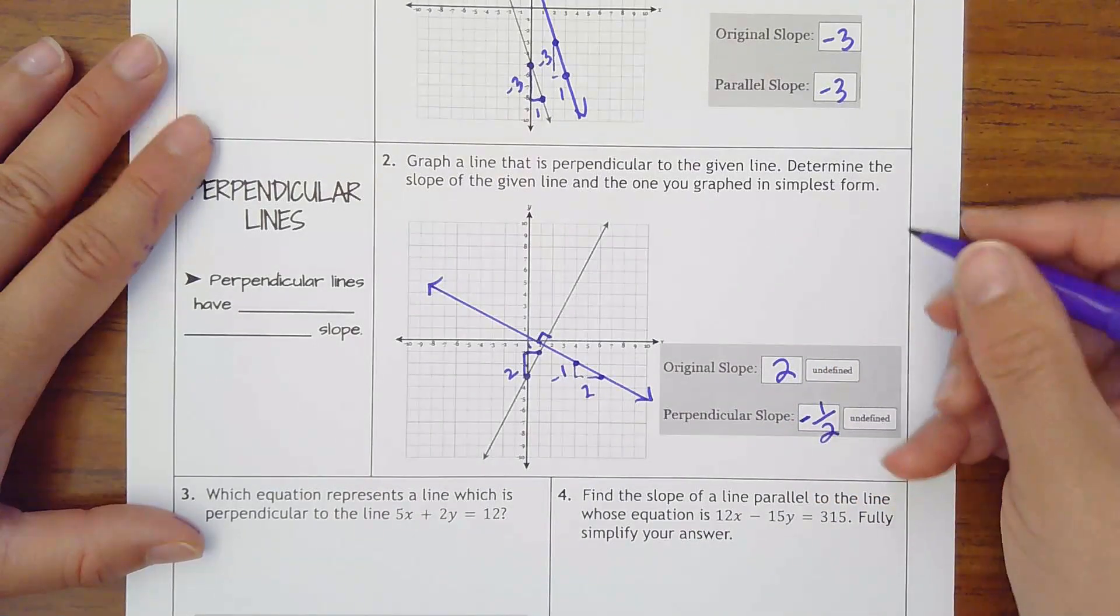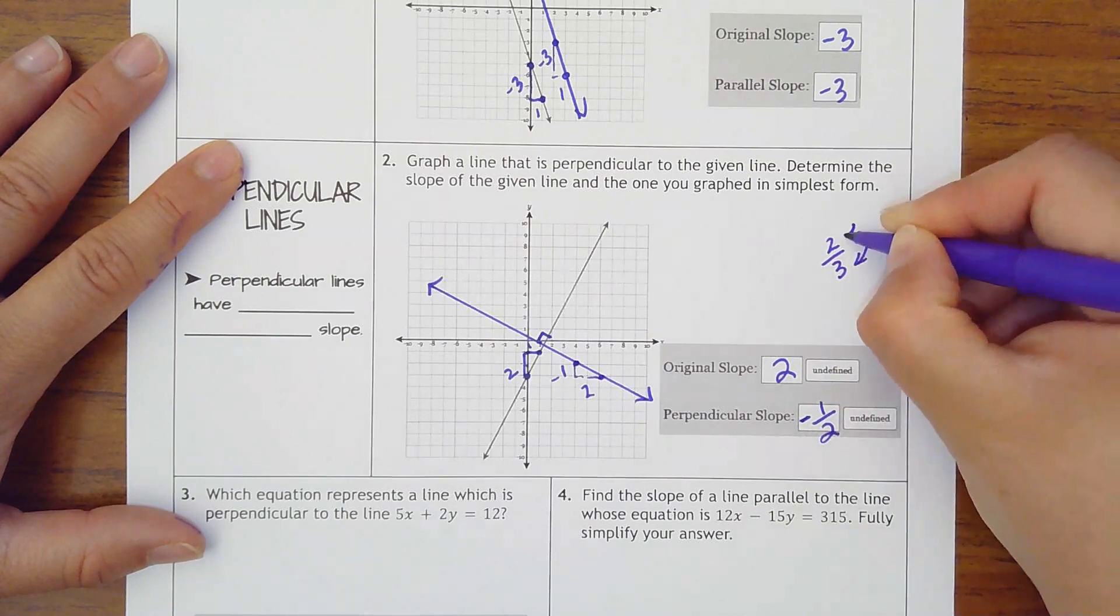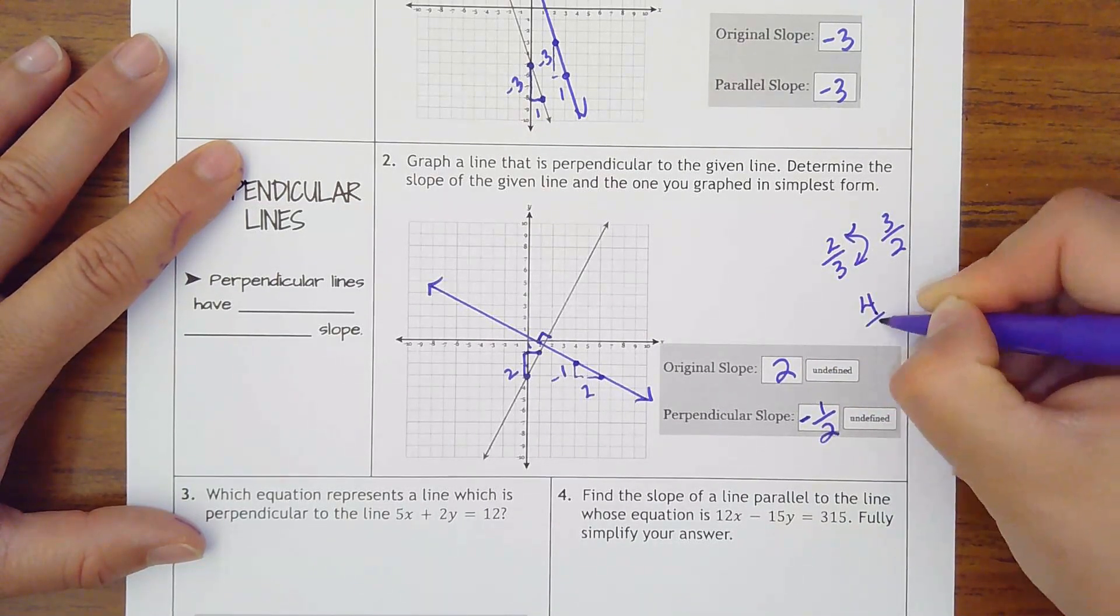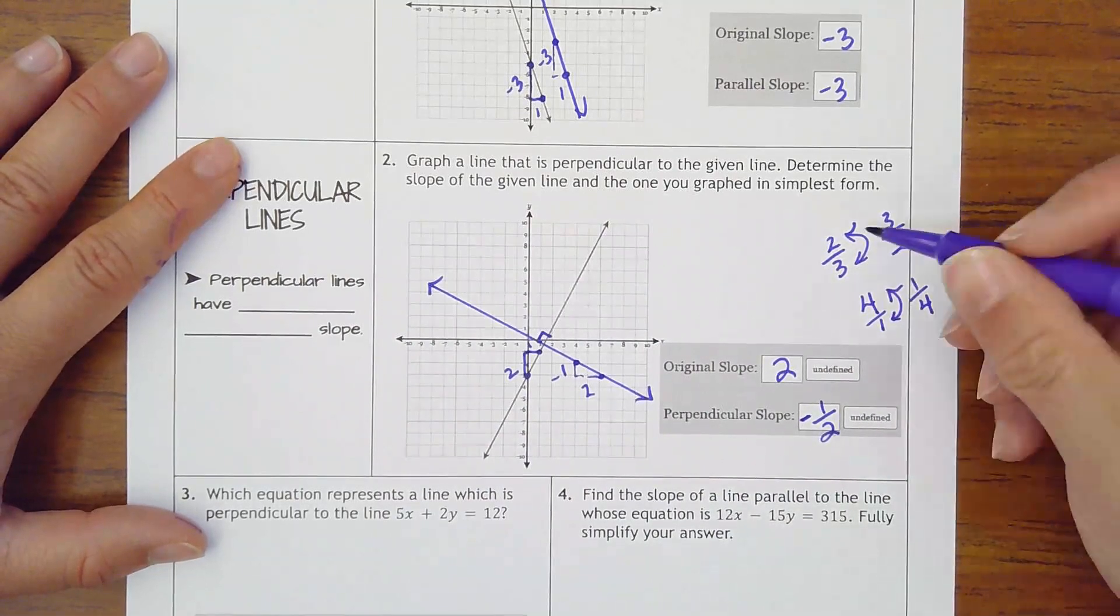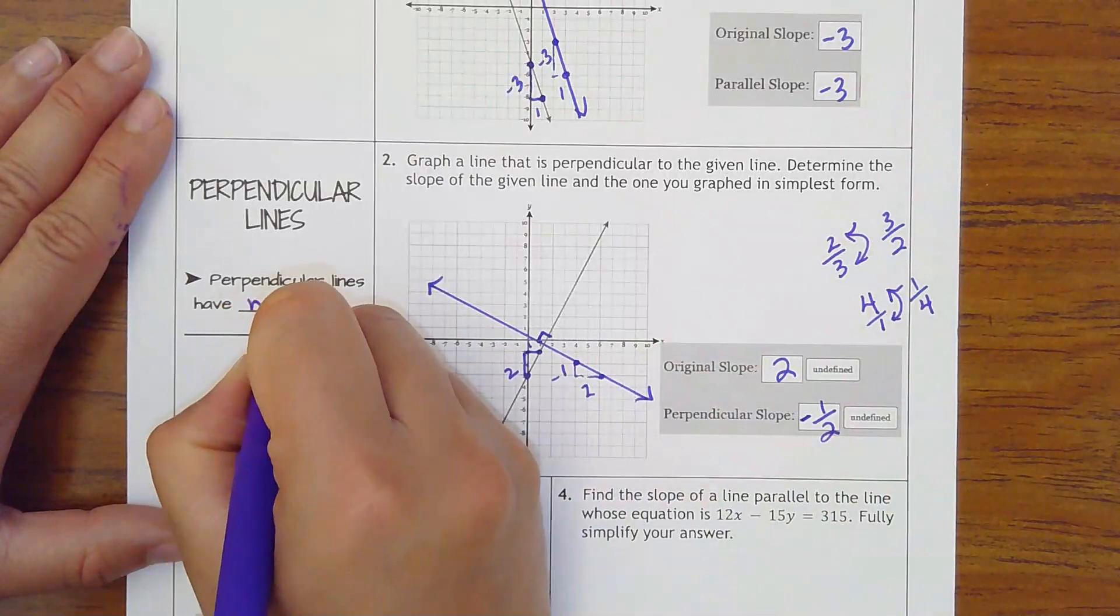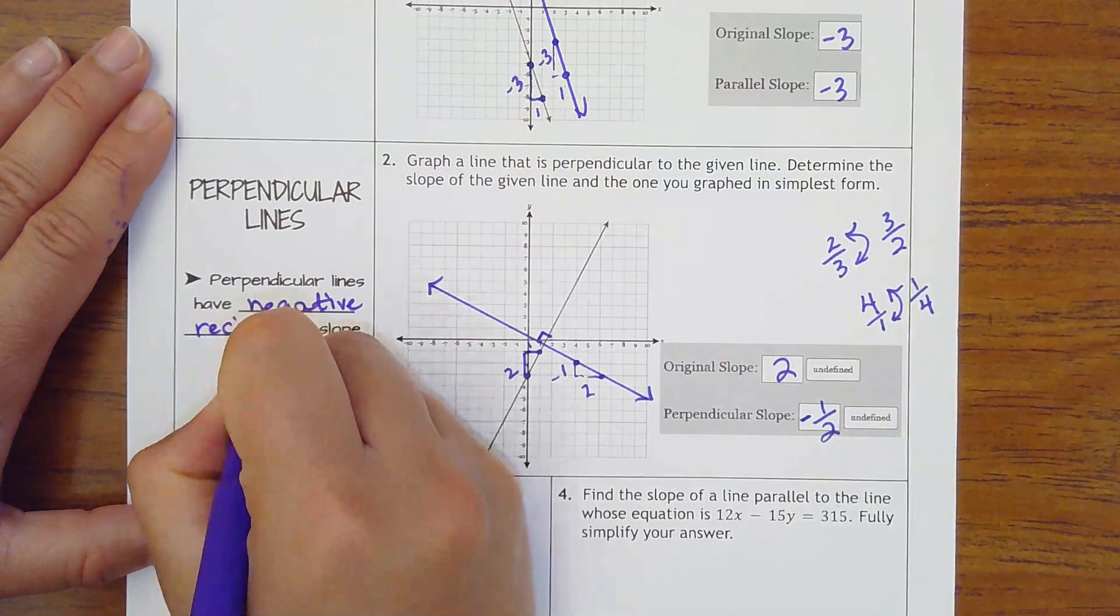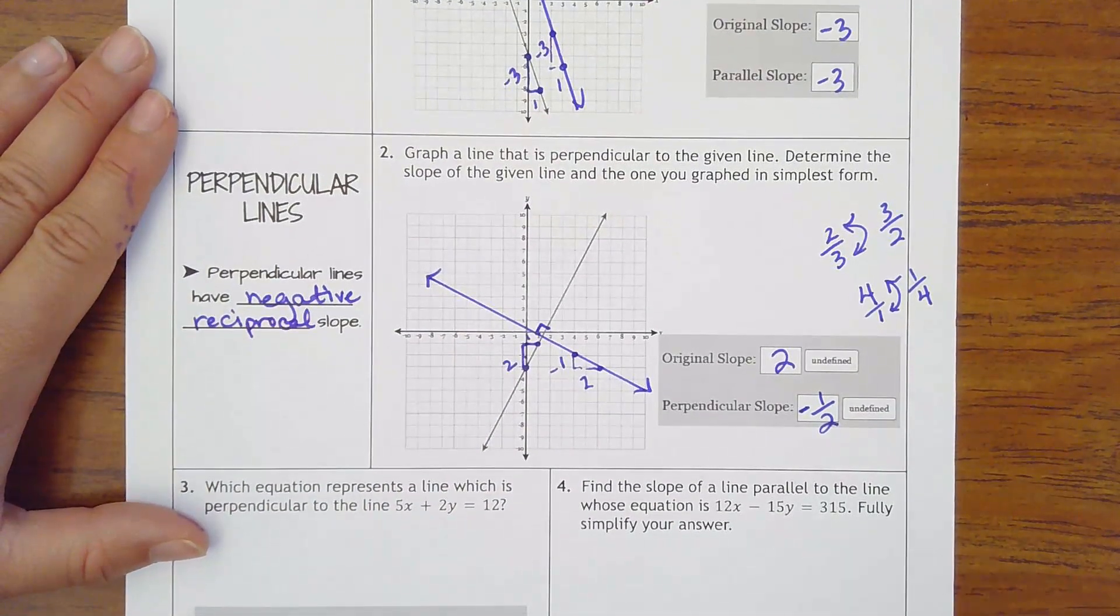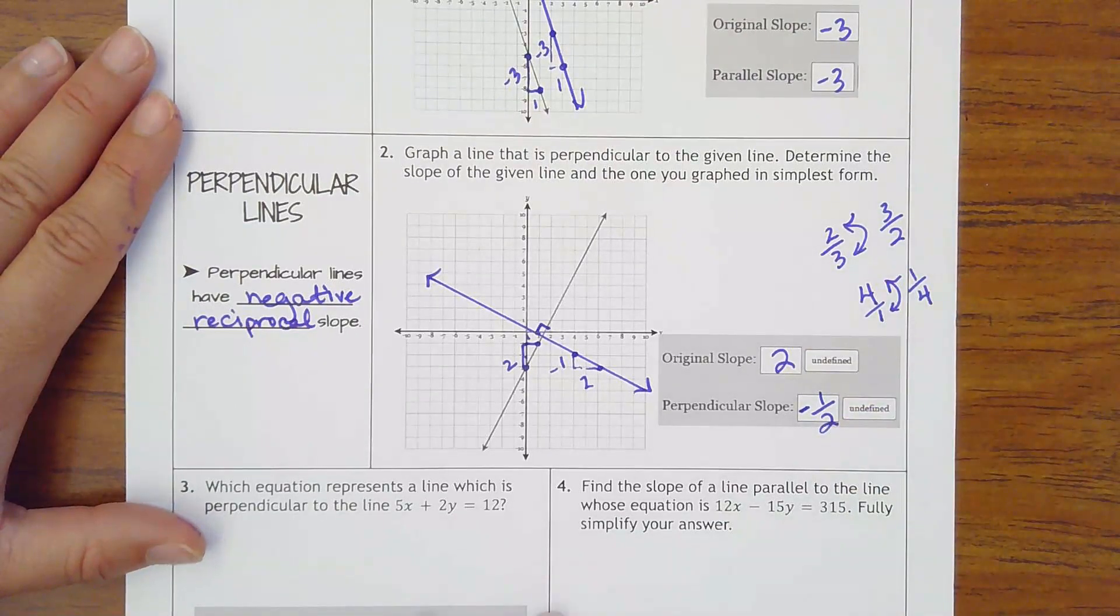A reciprocal is when you flip it. Like let's say you had 2 thirds. The reciprocal would be 3 over 2. Or if you had 4, which is over 1, the reciprocal would become 1 over 4. So it's negative reciprocal. So perpendicular lines always have negative reciprocal slopes. Meaning one's going to be positive, one's going to be negative. And they have to be reciprocals of each other.